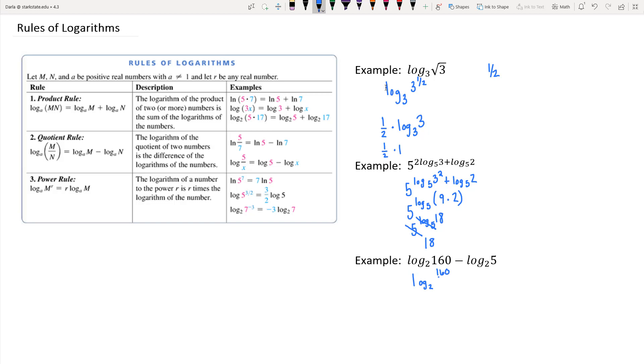So this is log base two of 32, which you might not know offhand, but 32 is two to the fifth. So you could rewrite it as such.